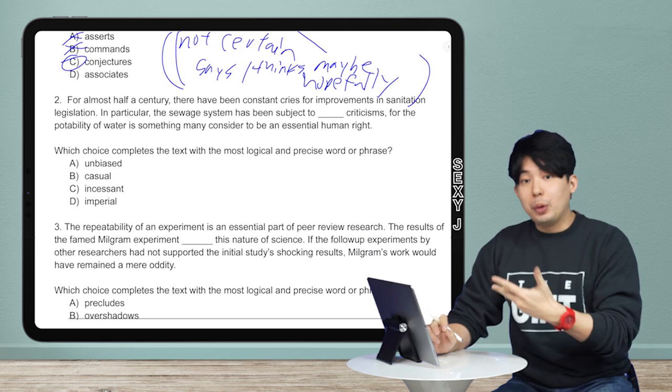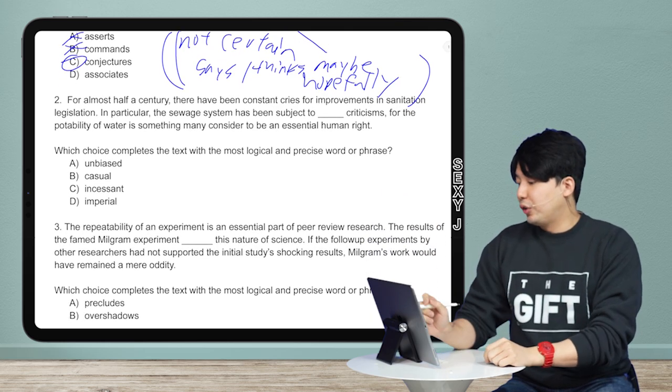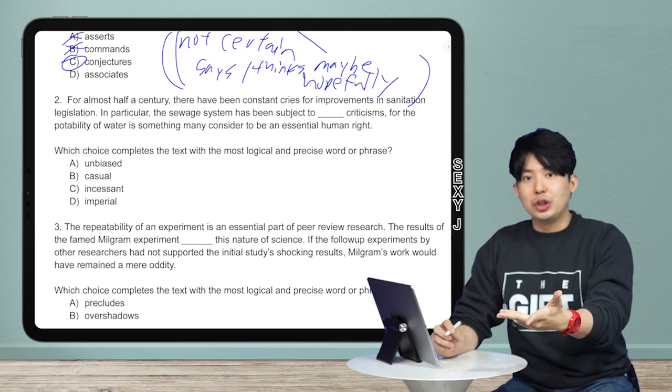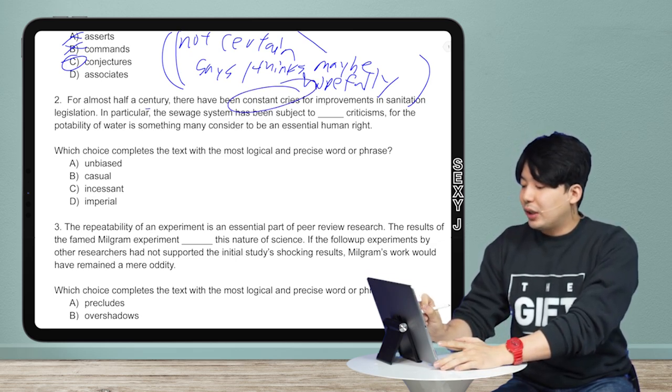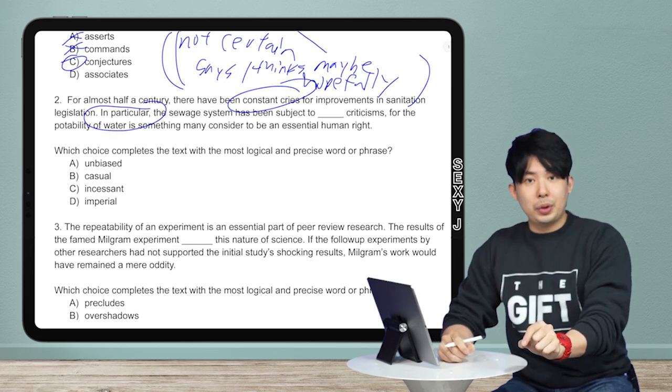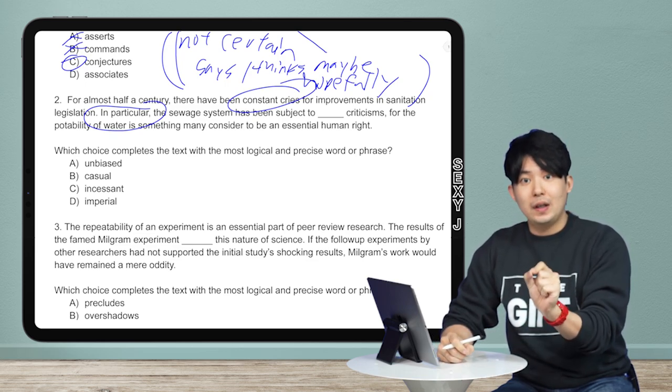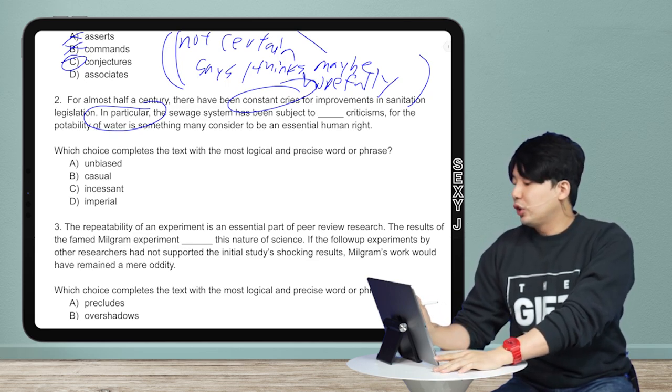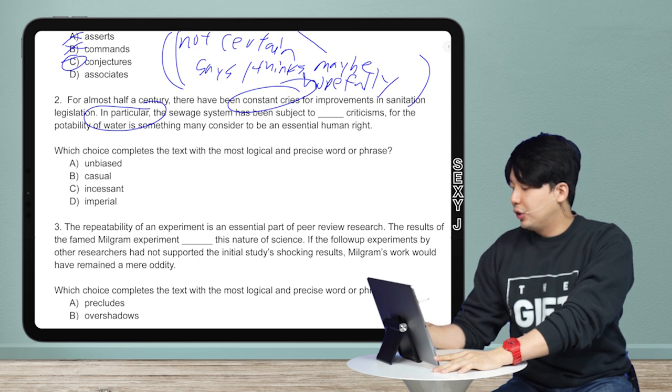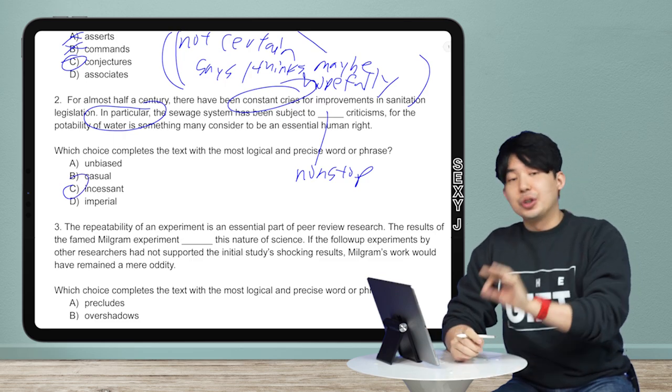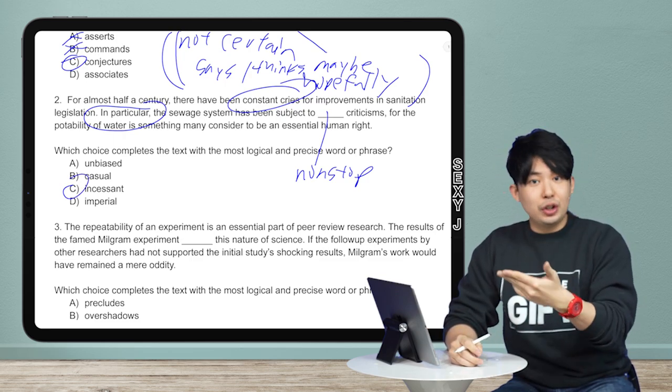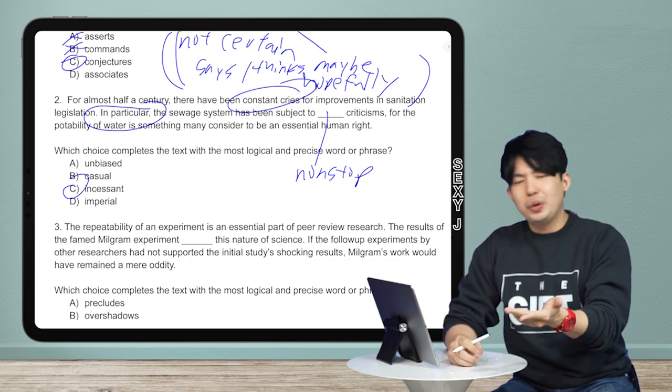And I'm going to do a couple questions here because these are pretty simple. So, for this one, you guys can pause the screen to read the question if you want, but there have been constant cries. So, in particular, in particular, another transition. If I have the word in particular, that means this is a specific example. So, the sewage system has been subject to constant cries. So, non-stop. Why? Because it's constant. What word means non-stop? Incessant, okay?